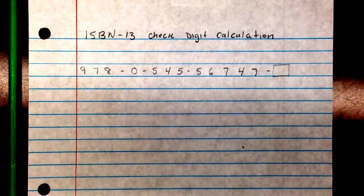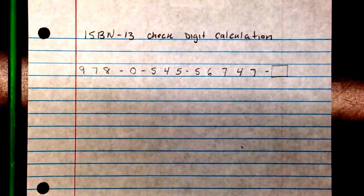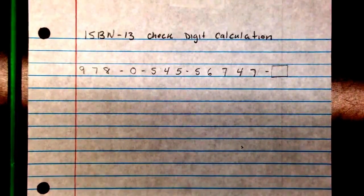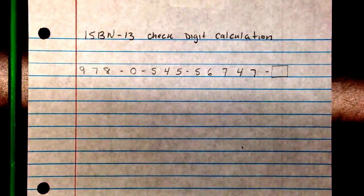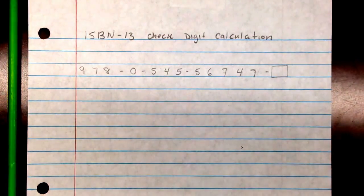Mr. Herman's back, this time with something a little different. This time we're going to look at an ISBN-13 number and calculate the check digit for that. This is going to be a little bit different than the past one we've done.